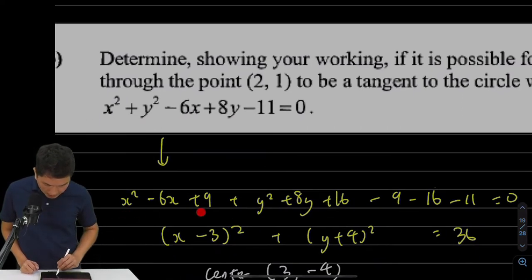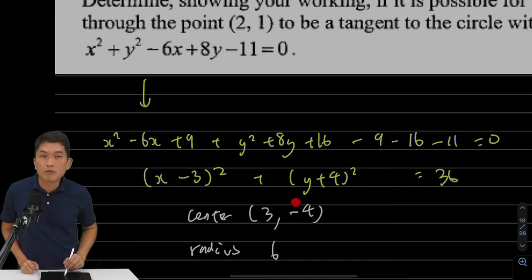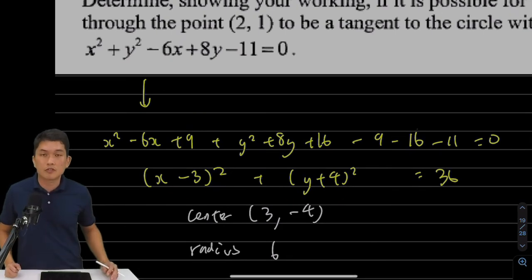So to complete the square for x, I need to borrow a 9. To complete the square for y, I need to borrow a 16. Make sure you subtract those away. And then you should come up with x minus 3 all squared plus y plus 4 all squared equals 36. So the center of the circle is 3, negative 4. The radius is 6.